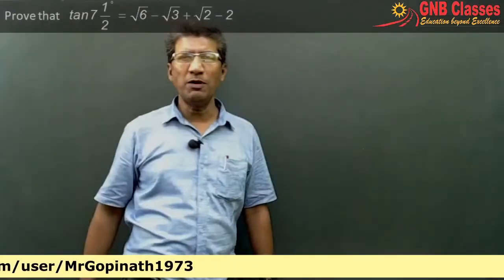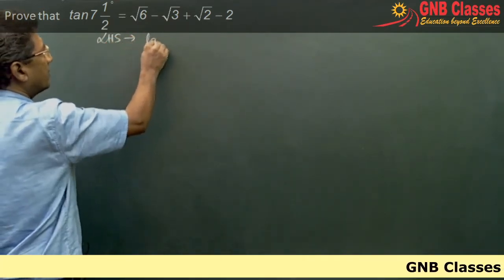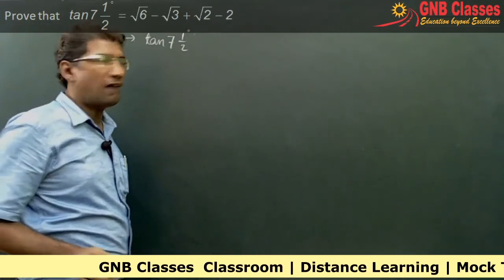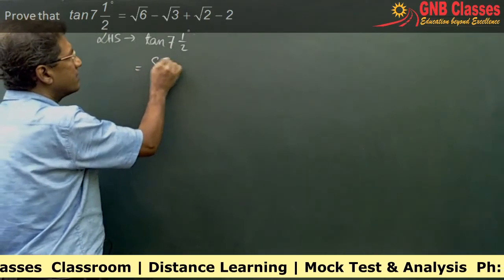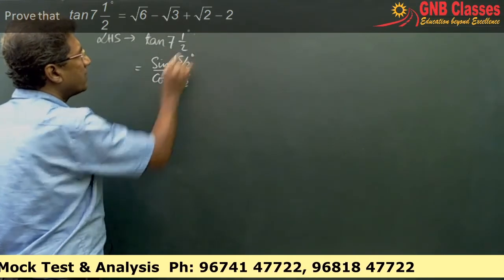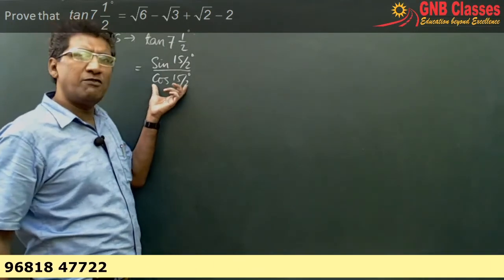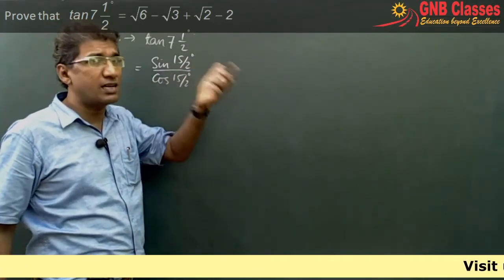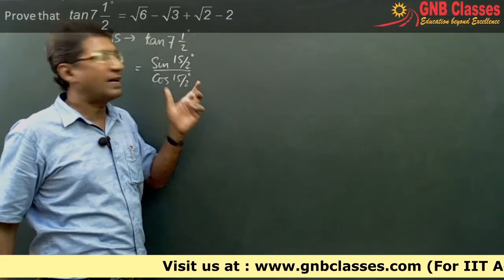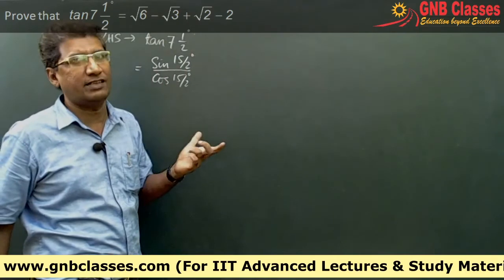In this problem, we need to find the value of tan(7.5°). This can be written as sin(15/2) / cos(15/2). Whenever this kind of expression comes, remember you have to multiply numerator and denominator in such a way that the denominator gives you sin(θ), by forming 2sin(θ)cos(θ) and replacing it by sin(2θ).